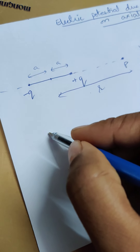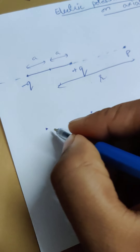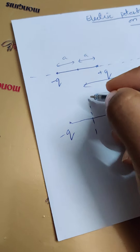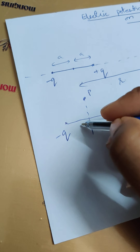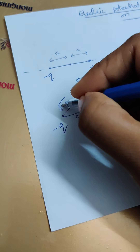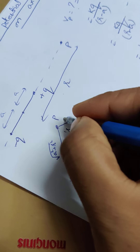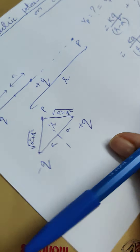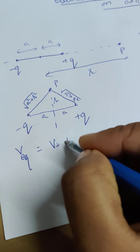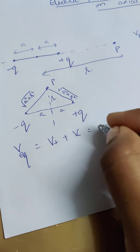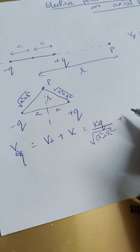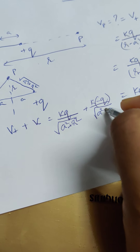Now for the equatorial line — the perpendicular bisector of the dipole. The charges are minus q and plus q, each at distance a from the midpoint. At any point P on the equatorial line, let the distance from the midpoint to P be r. The distance from each charge to P is then √(a²+r²) for both charges. So the potential due to the positive charge is kq/√(a²+r²) and due to the negative charge is k(−q)/√(a²+r²).